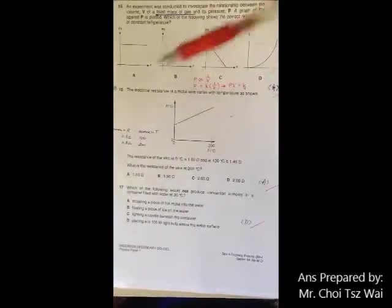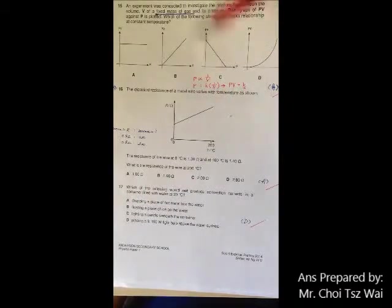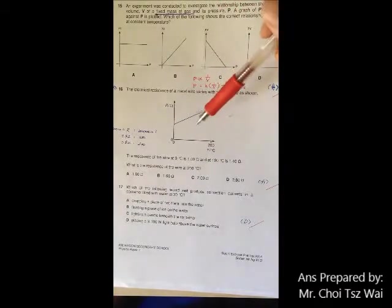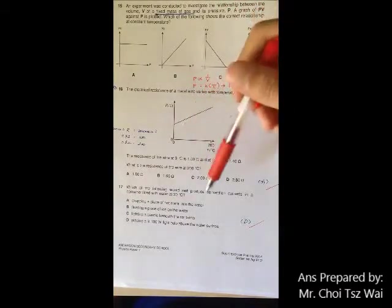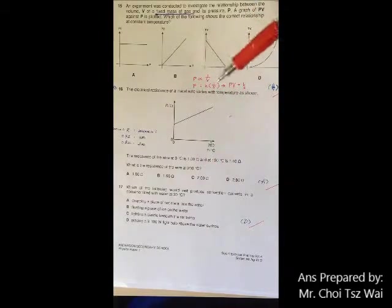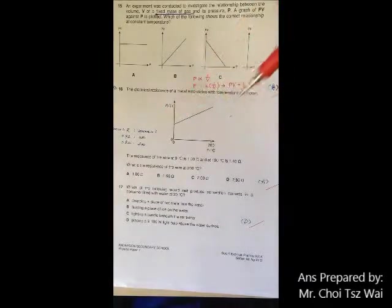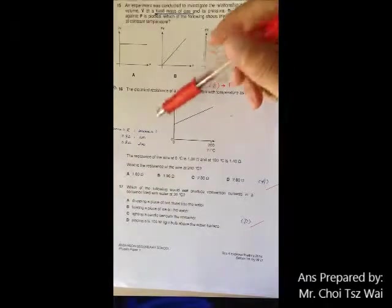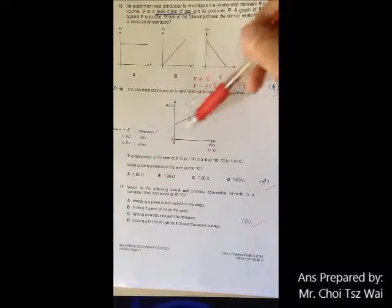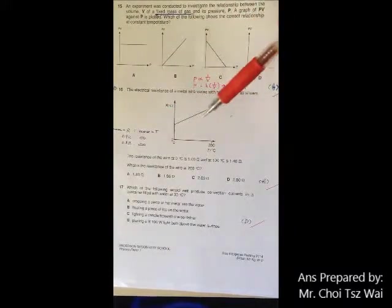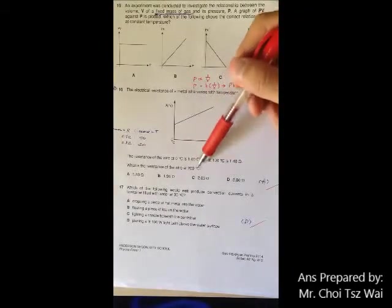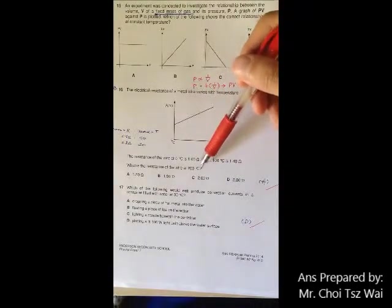Okay, 16. You're asked to read the graph. Either you can just use the formula given by the book and find the answer. If not, for me, I don't remember the formula. So what I did is that I find the gradient, then I proceed. You can either find the gradient and then deduce the equation of the line, and then you can find the unknown here corresponding to 200 degrees C.